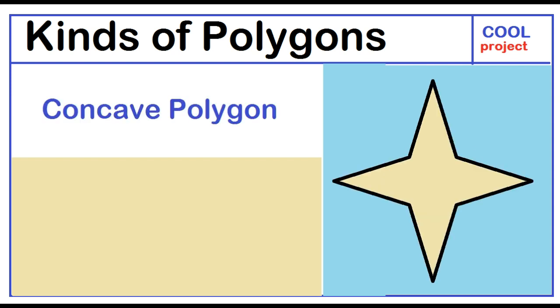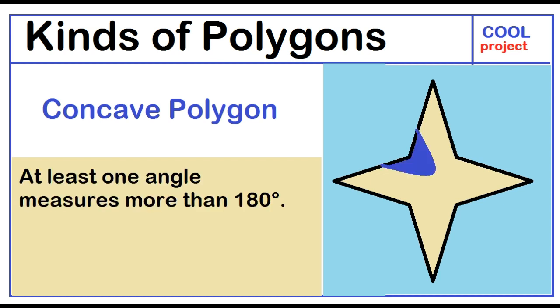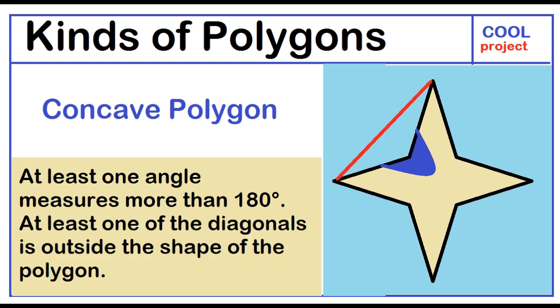Concave polygon. At least one angle measures more than 180 degrees. At least one of the diagonals is outside the shape of the polygon.